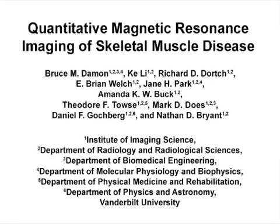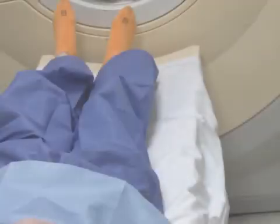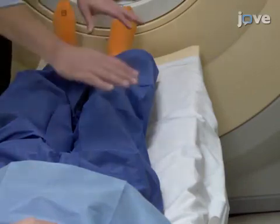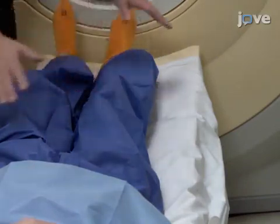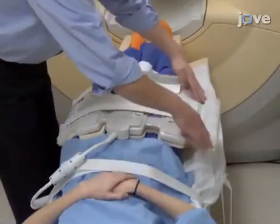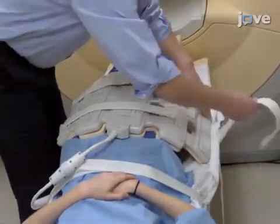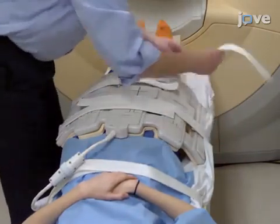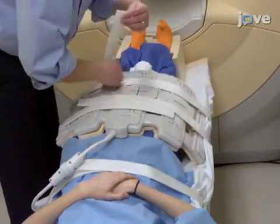The overall goal of this procedure is to characterize the spatially heterogeneous pathology that is characteristic of many neuromuscular diseases by using non-invasive magnetic resonance imaging methods. This is accomplished by first defining an MRI protocol composed of one or more quantitative methods. The second step is to position the patient in the MRI scanner such that she or he feels comfortable and secure but is not able to perform extraneous movements.